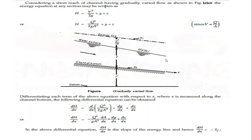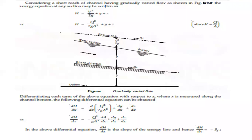At a given section, the flow depth is y. The slope of the water surface relative to the channel bottom is dy/dx. The velocity head is V²/(2g) and its variation along x is dV/dx. These are the standard notations assumed for the derivation.